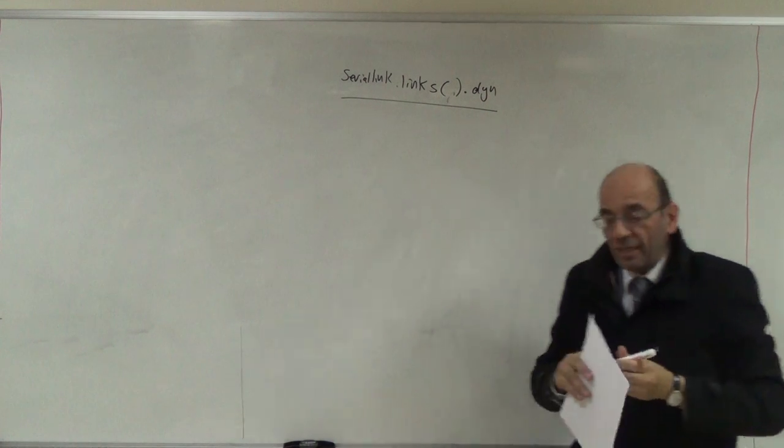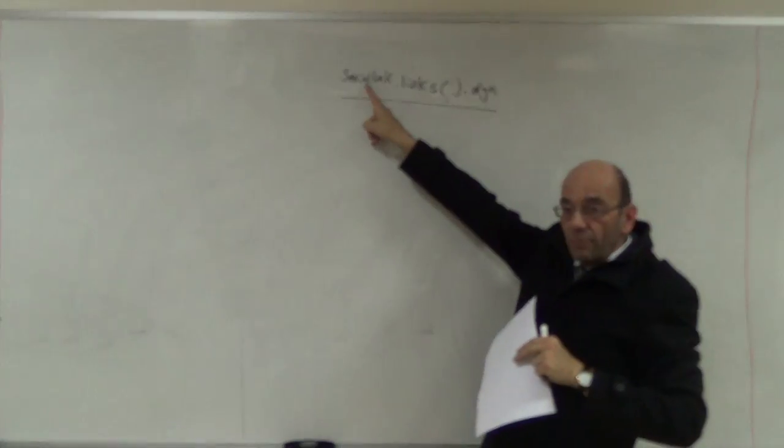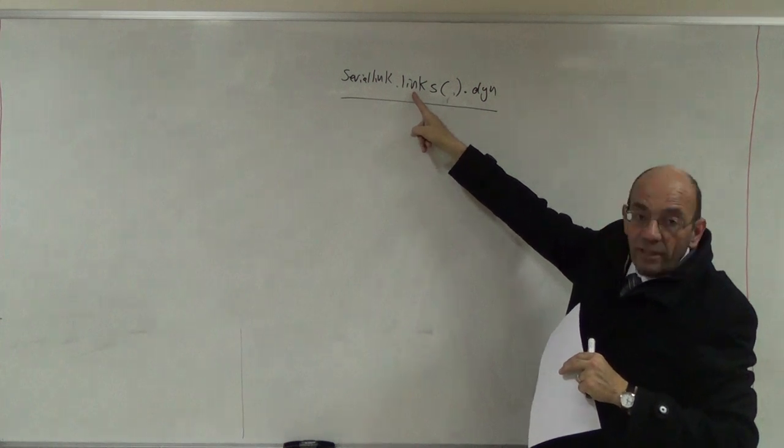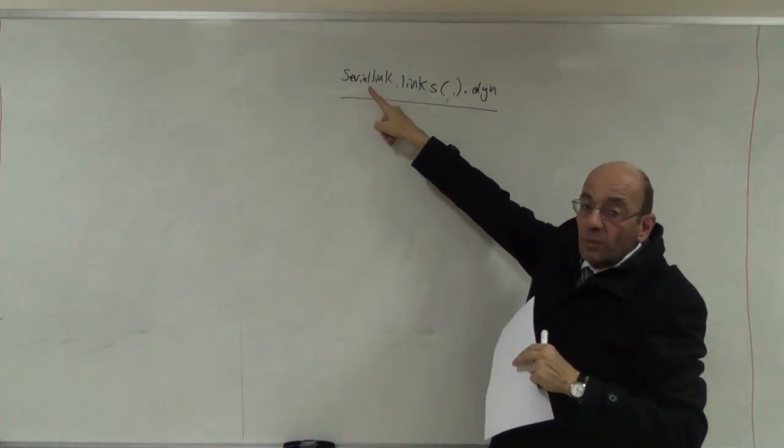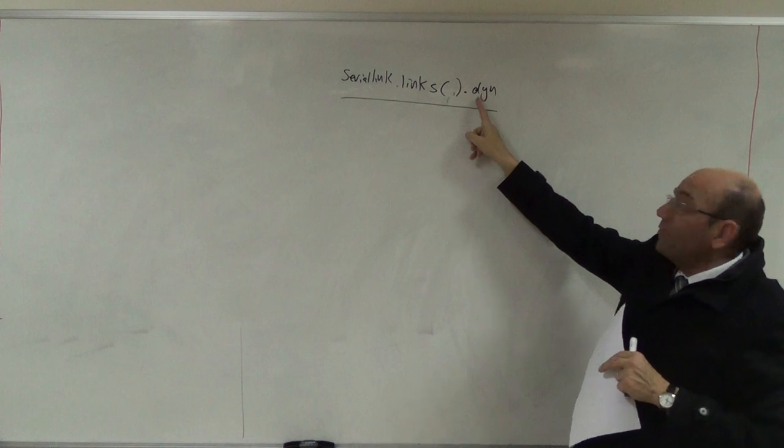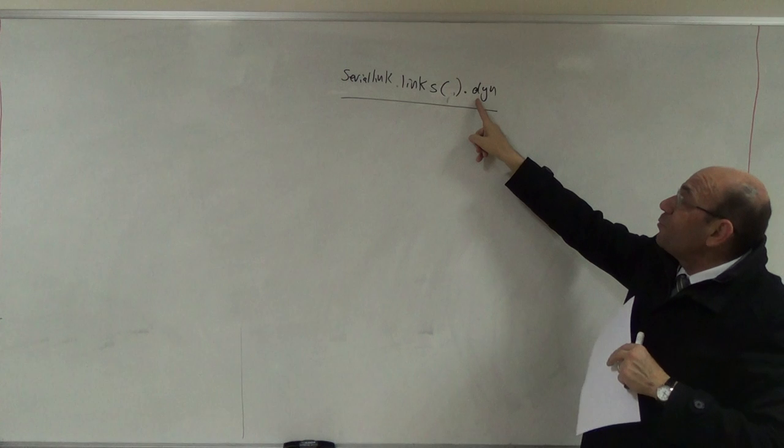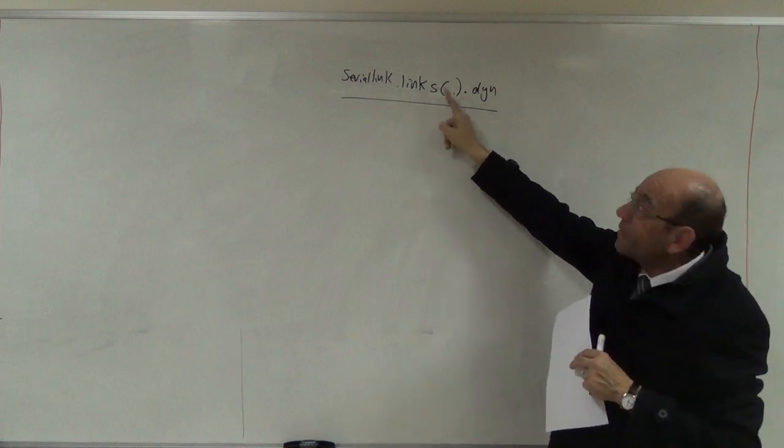The serial link is composed of a collection of links. This is a sub-object of that object. And then what do we call this? Like in this case, Dyn is the links.